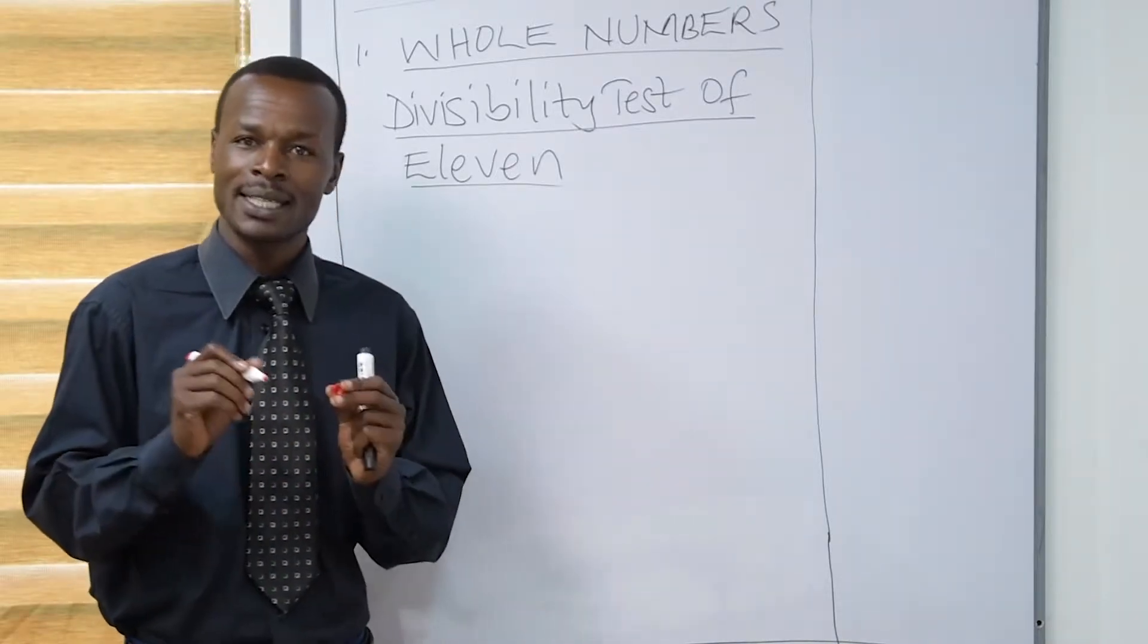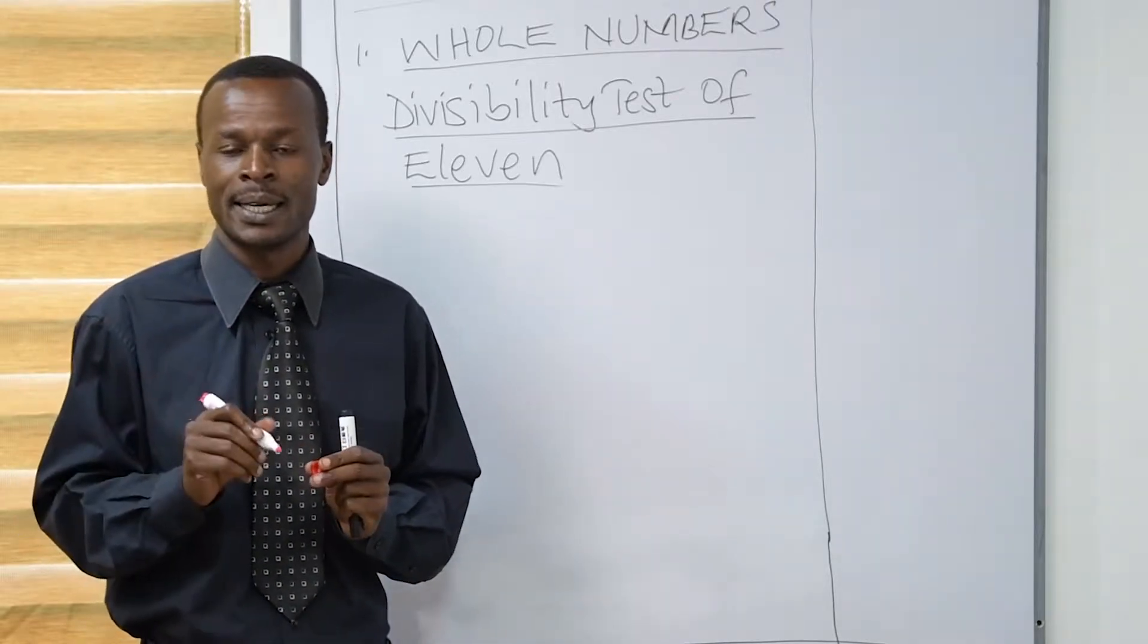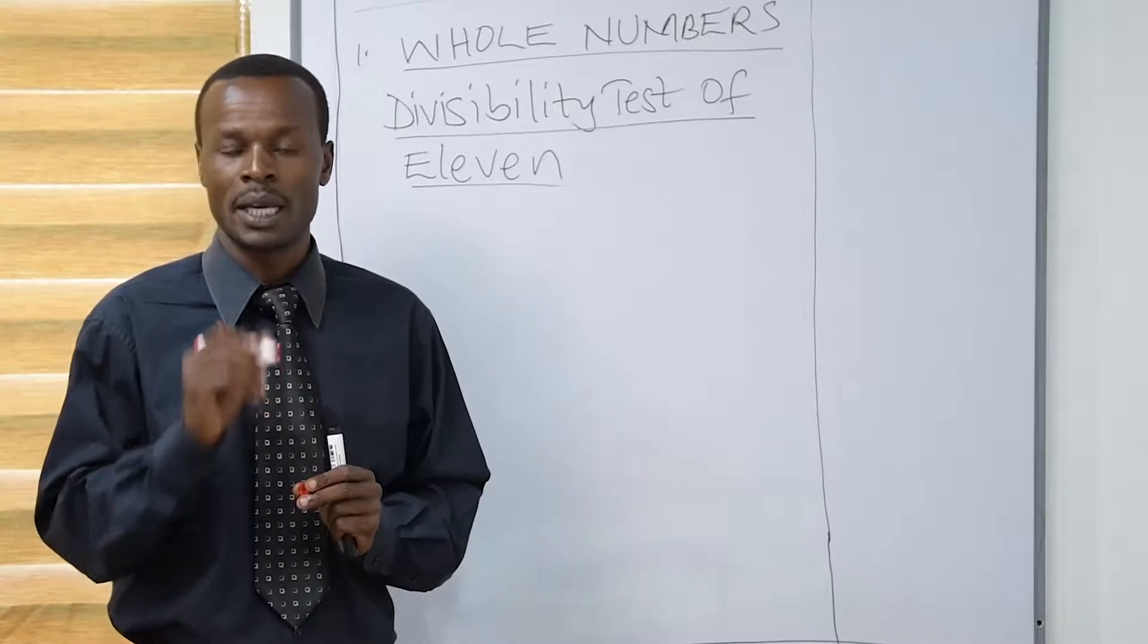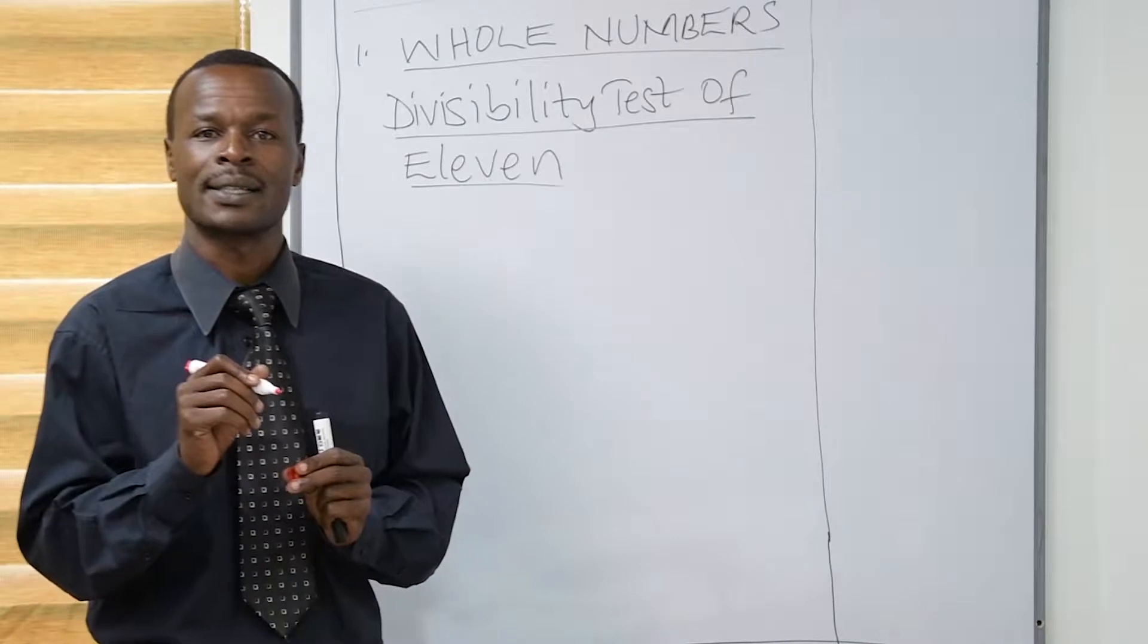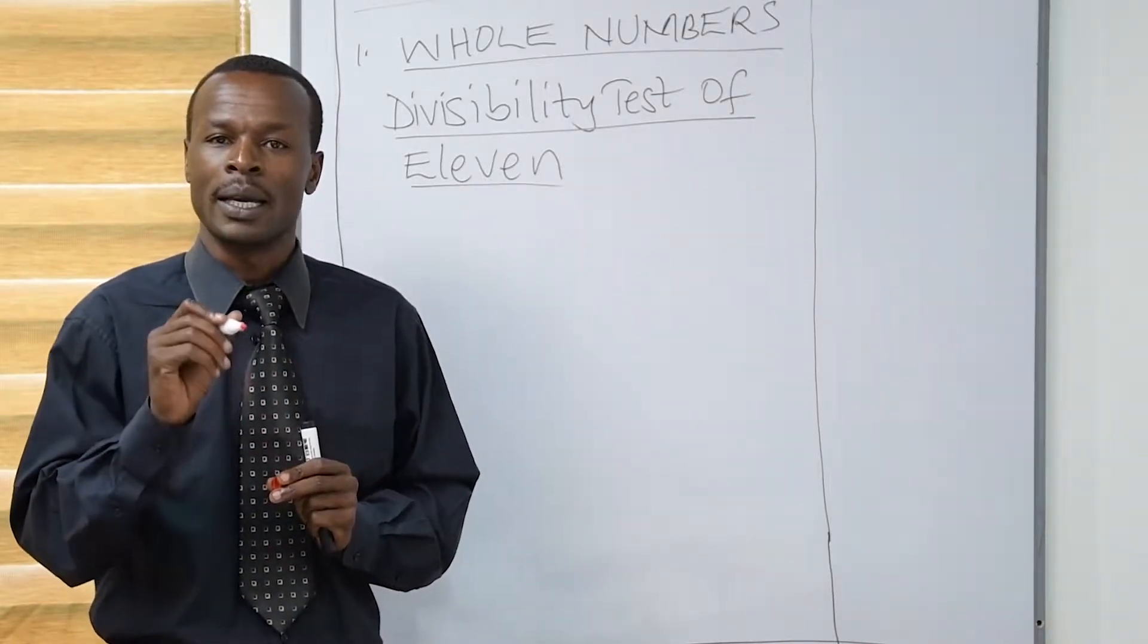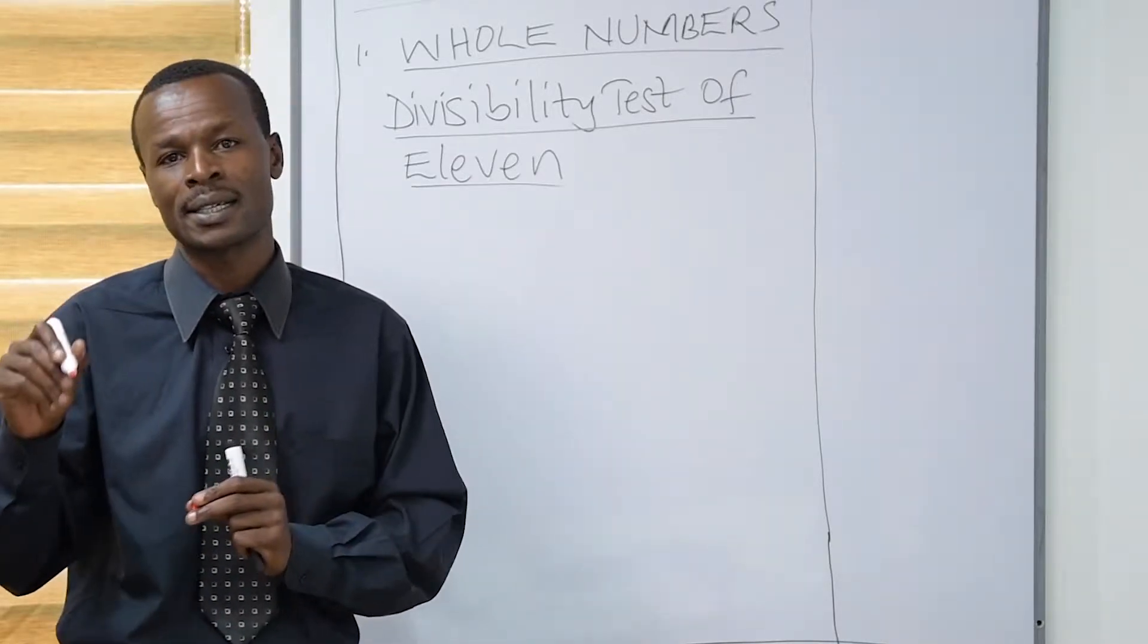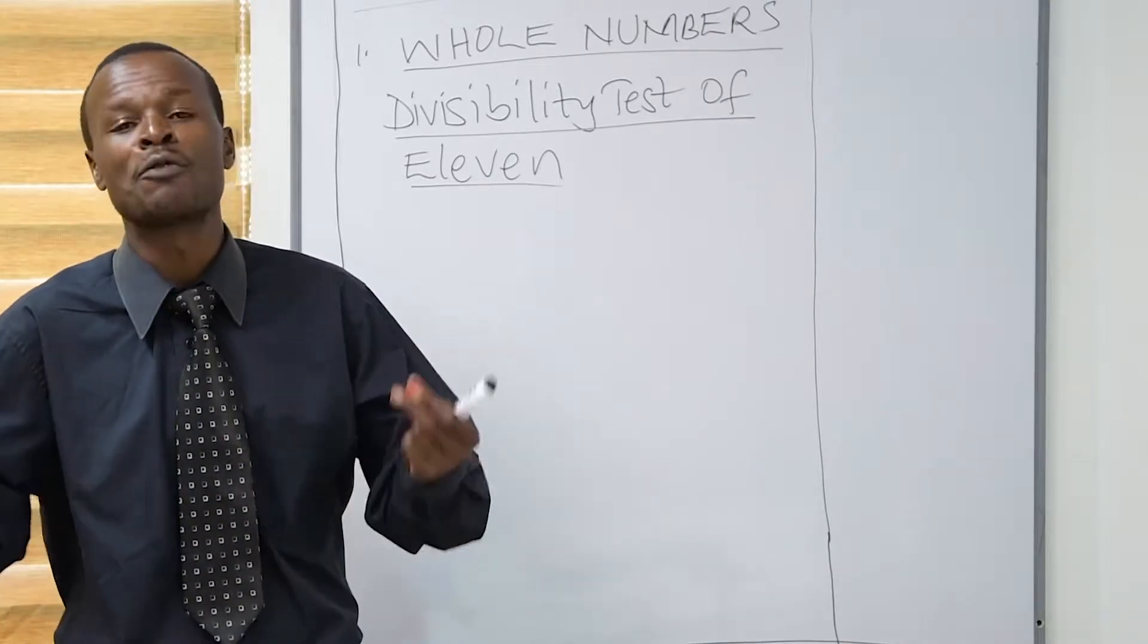Now, let's define what divisibility test of 11 is. A number is divisible by 11 if the sum of the digits in the alternate places will give us a difference of 0, 11, and multiples of 11 such as 22, 33, 34, and 44.